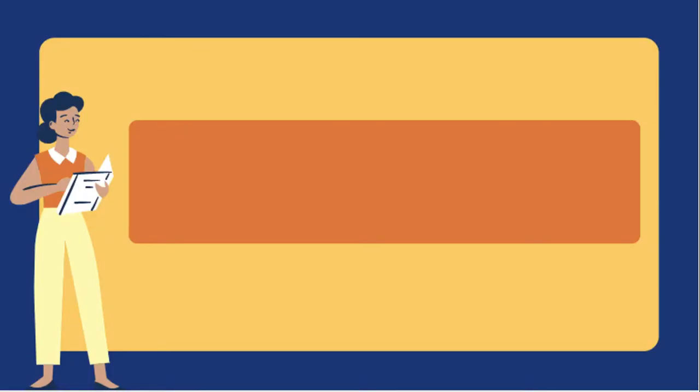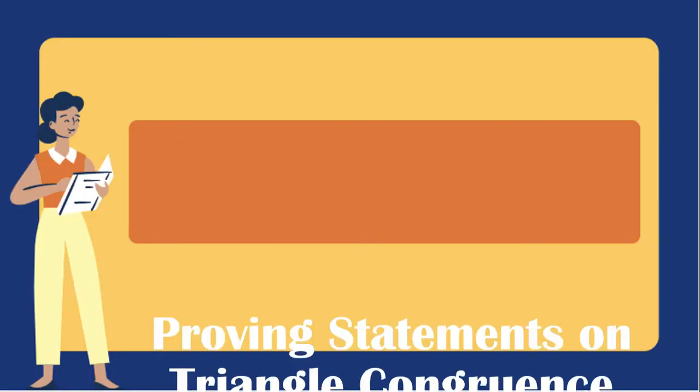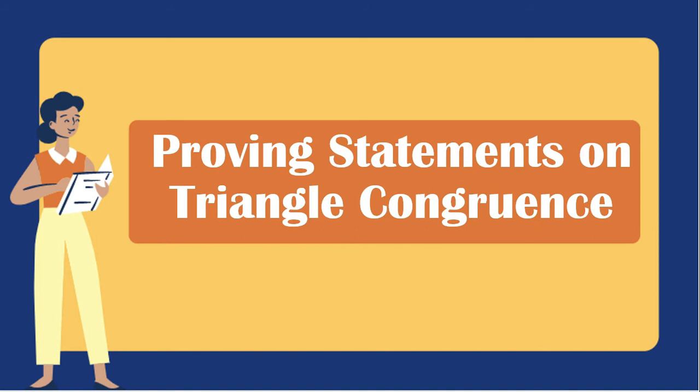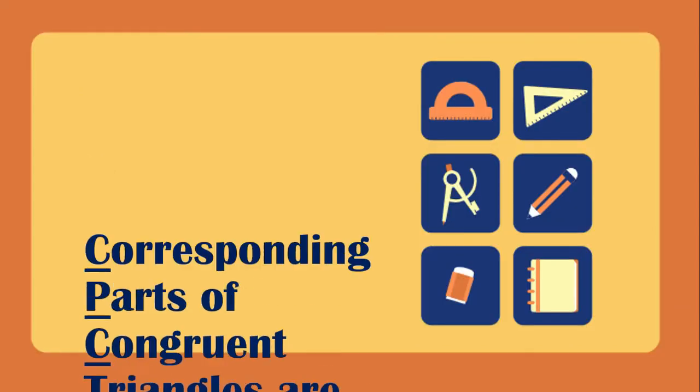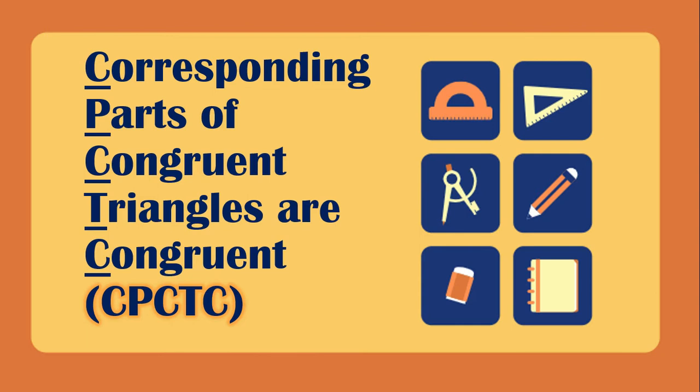In this video lesson, we will be proving statements on triangle congruence. We will be using CPCTC, or corresponding parts of congruent triangles are congruent. It means that if we already prove that two triangles are congruent, we can then prove that the corresponding parts like the sides or the angles are also congruent.